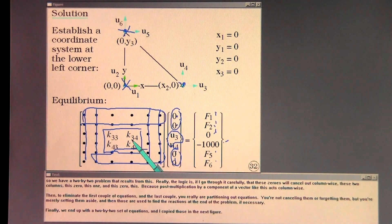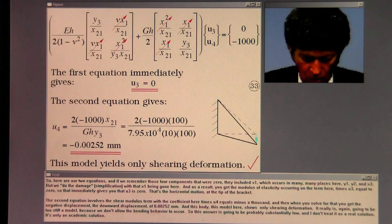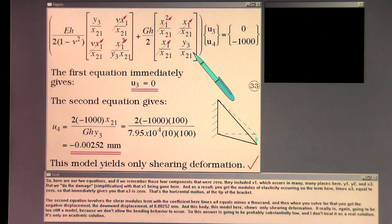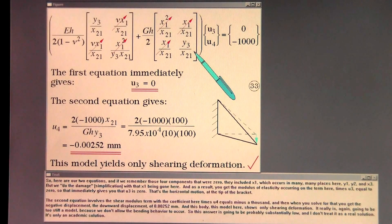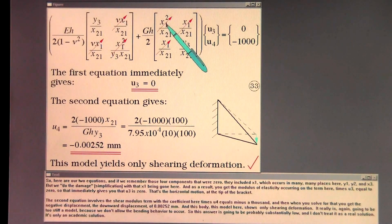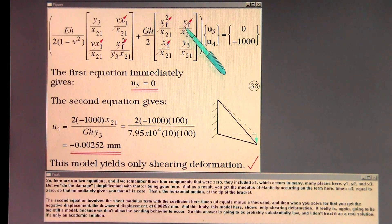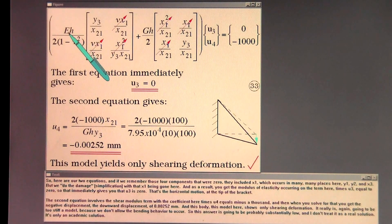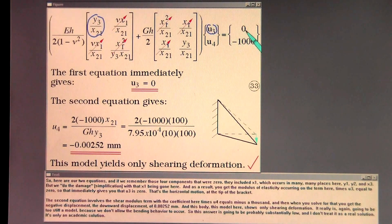Finally, we end up with a two by two set of equations, and I copy those in the next figure. Here are our two equations, and if we remember those four components that were zero — they included x1, which occurs in many places here, y1, y2, and x3. We do the damage pretty much with that x1 being gone here. As a result, you get the modulus of elasticity occurring on the term here times u3 equal to zero. So that immediately gives you that u3 is zero.